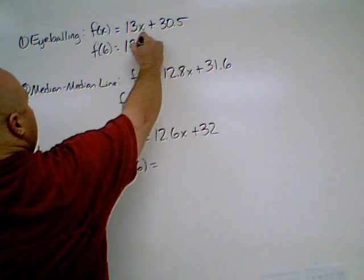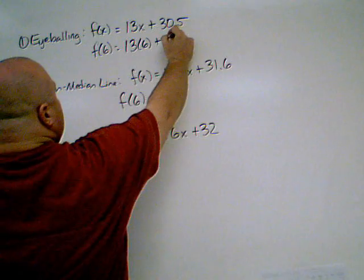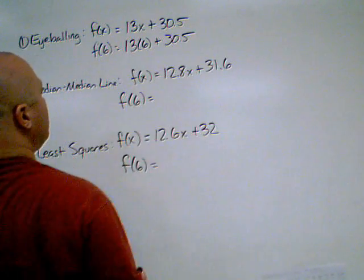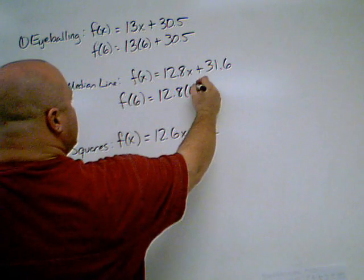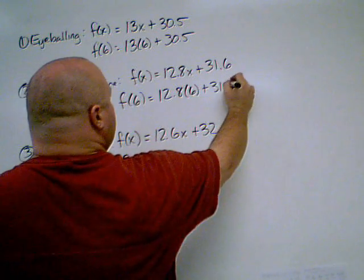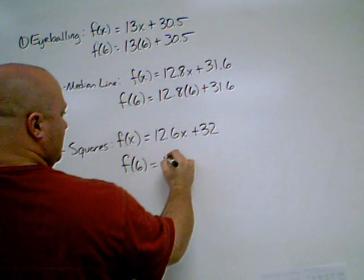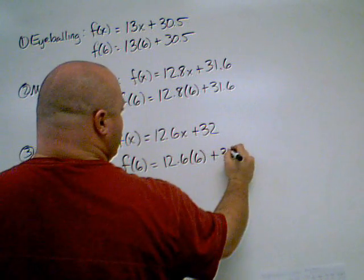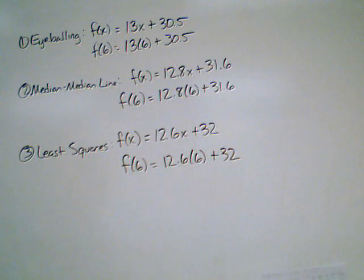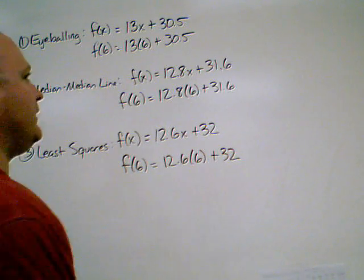So when I plug in six here, you're 13 times 6 plus 30.5. Down here it's 12.8 times 6 plus 31.6. Now it's just a matter of doing the calculations.